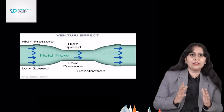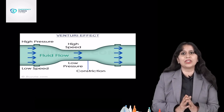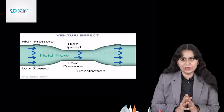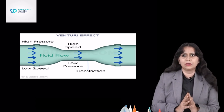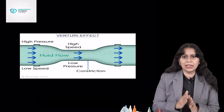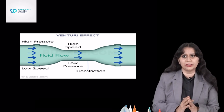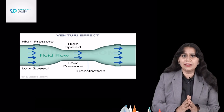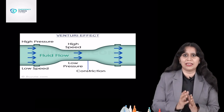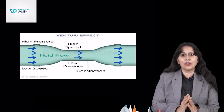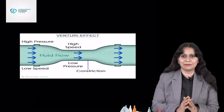So this is our Venturi mask and these are the low dependency devices I wanted to discuss. Depending upon your patient's respiratory pattern and the requirement for oxygen concentration, you should choose your device and prevent any wastage of oxygen by precisely giving the oxygen required by that patient. I hope this will be helpful in choosing the device. Thank you.